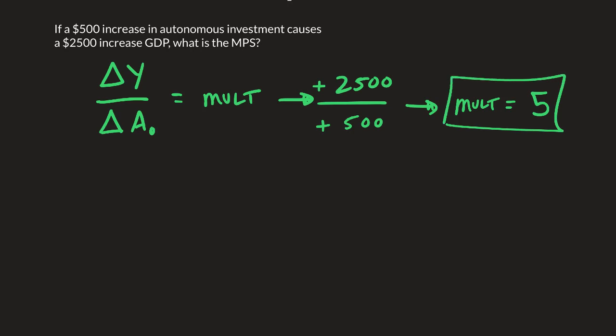That's useful information, because the multiplier is also equal to 1 over 1 minus MPC. And since 1 minus MPC equals MPS, the multiplier is equal to 1 over MPS.